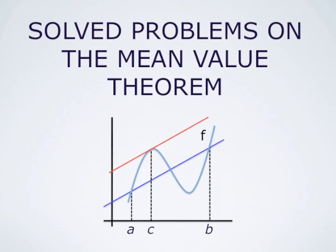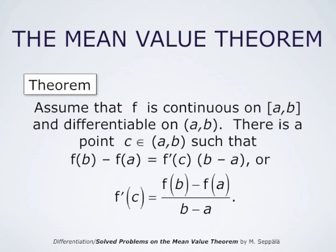We will solve problems on the mean value theorem. The mean value theorem says that if f is a continuous function on the closed interval from a to b, and differentiable on the open interval from a to b, then there is a point c between a and b such that f(b) minus f(a) equals f'(c) times b minus a, or equivalently f'(c) equals f(b) minus f(a) divided by b minus a.